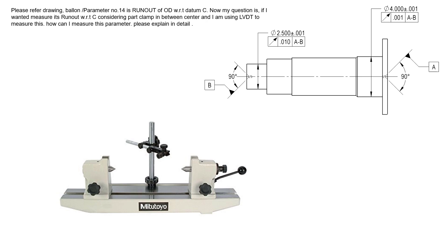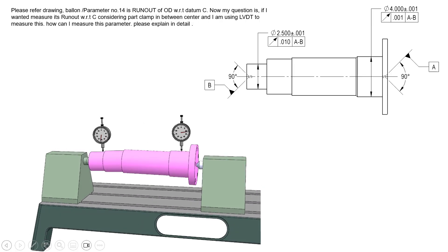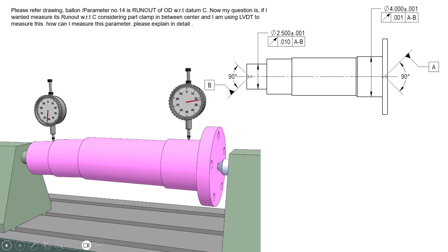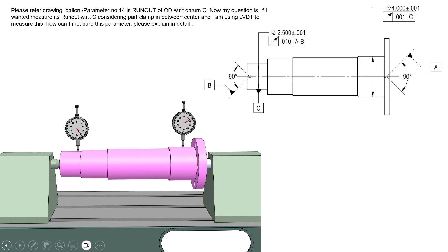We can certainly control all features to datum axis A-B and simply inspect by putting the part between centers and rotating it — just like shown in this animation. We have the part between centers and we're going to rotate it with an indicator or an LVDT on either one of these diameters. We're rotating around the centers, which is rotating around datum axis A-B, and both cylinders clearly have some level of runout.